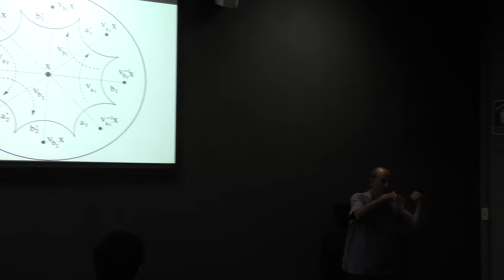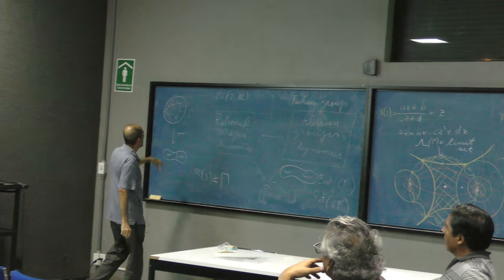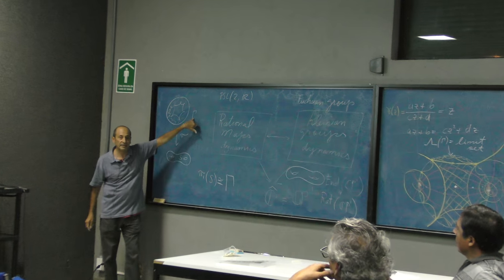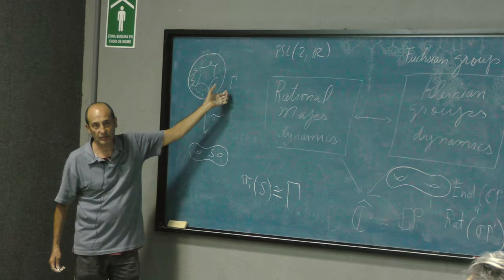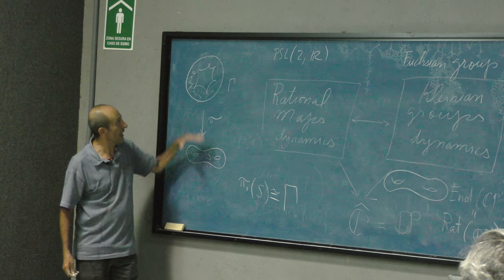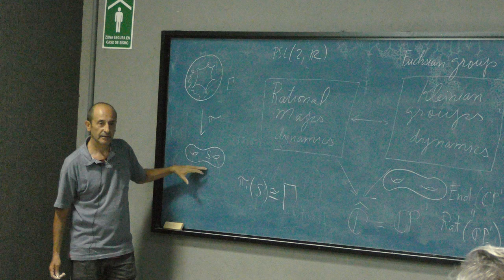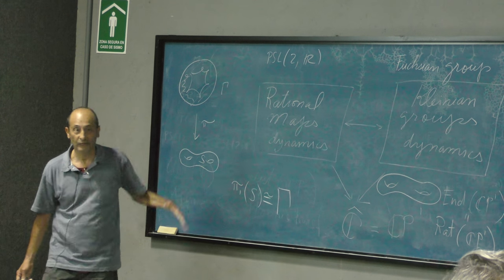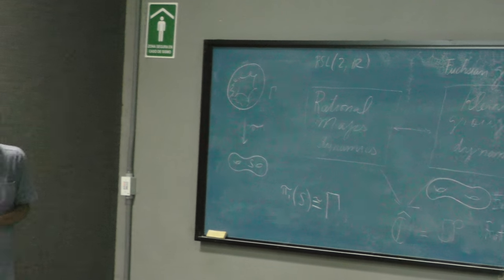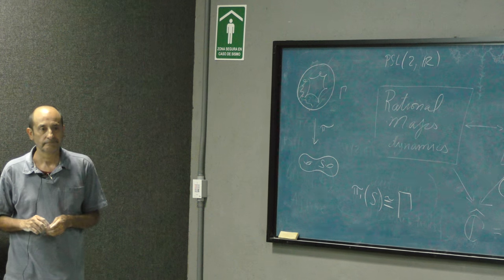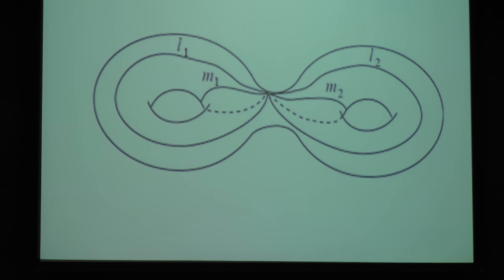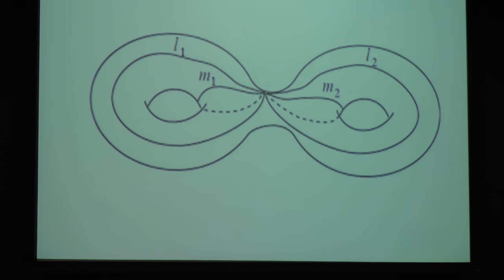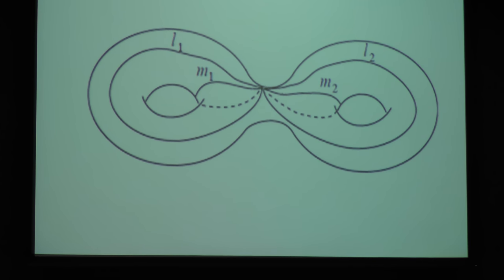So, these act by conformal maps, because they are Moebius transformations. So, this is isometric to the disc. Sometimes conformal. So, fantastic. Okay. So, what is the left hand side? I'm going to explain what means that black circle now, which is situated here.